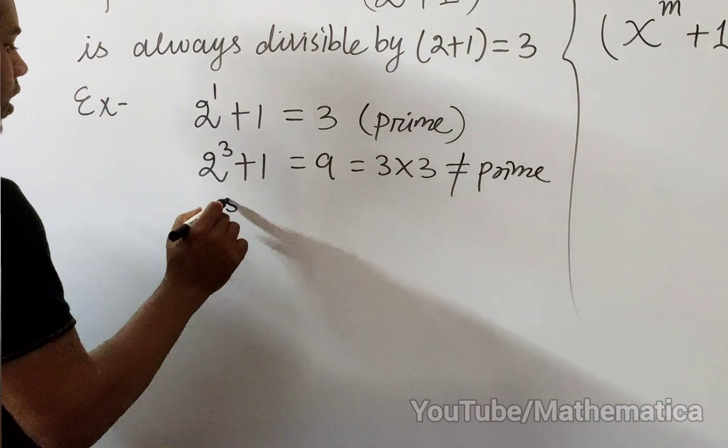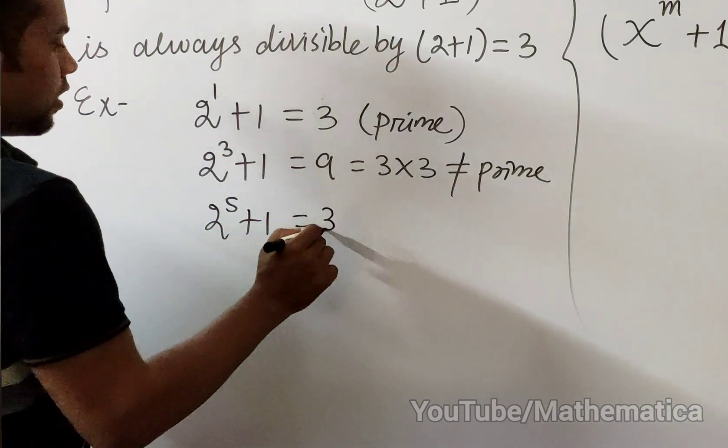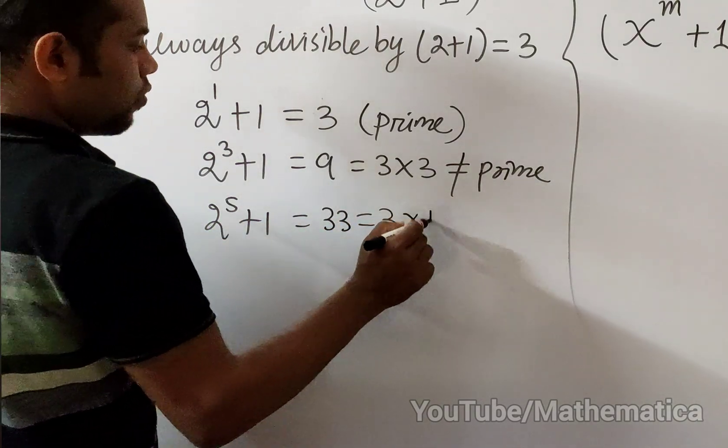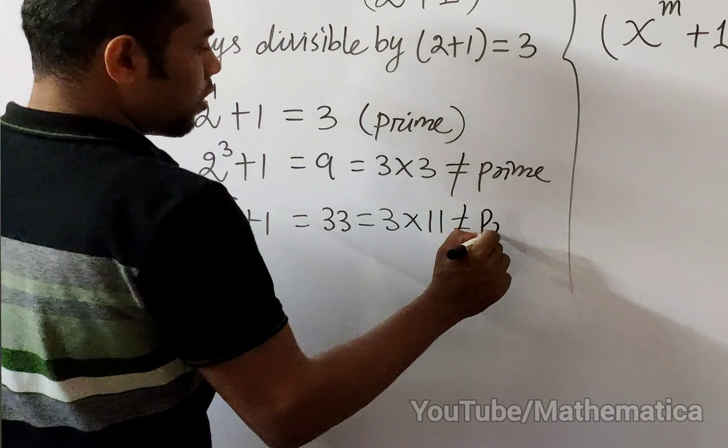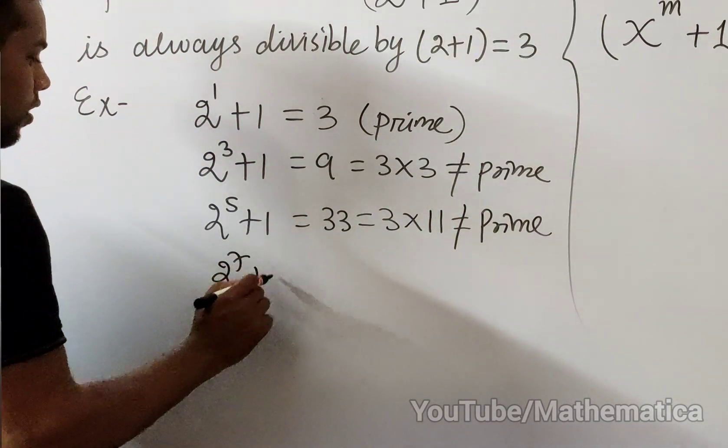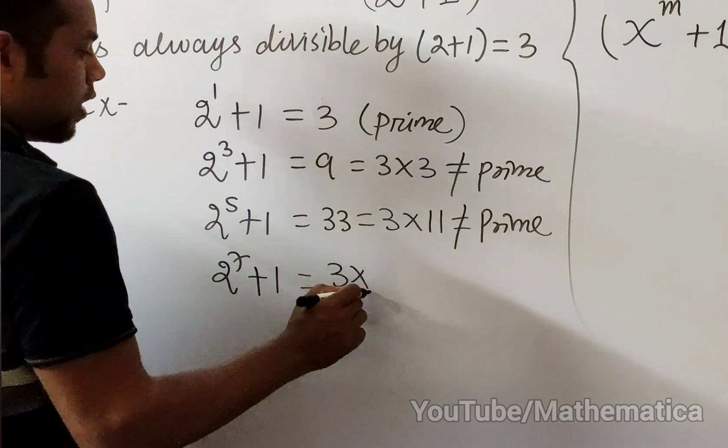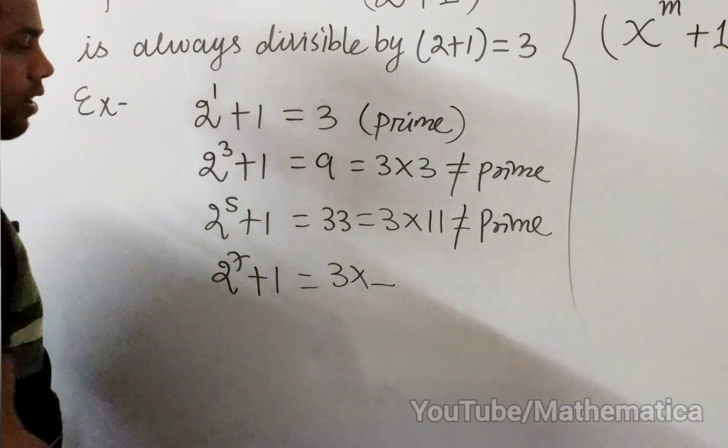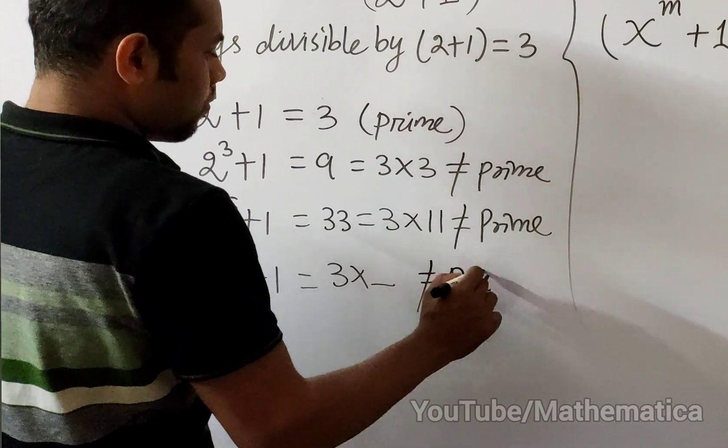Likewise, 2^5 + 1 is 33 and 3 into 11, which is not prime and so on. You will see that every odd number is multiple of something, and hence not prime.